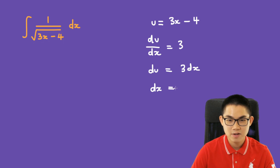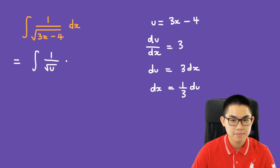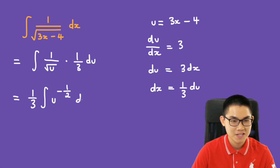dx is equal to 1 over 3 times du, so we get the integral of 1 over the square root of u, times 1 over 3 du. And we get 1 over 3 times the integral of u to the power of negative 1 over 2, du.